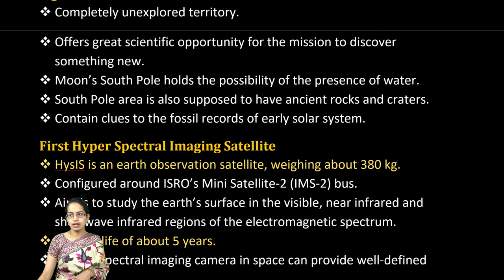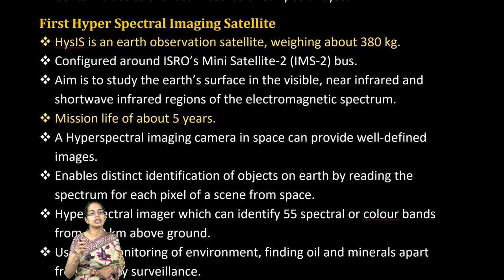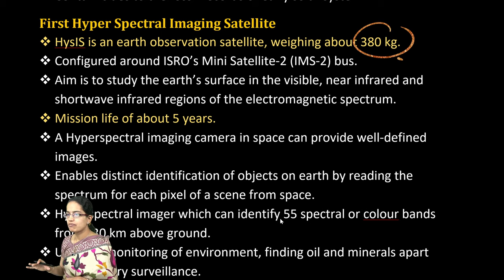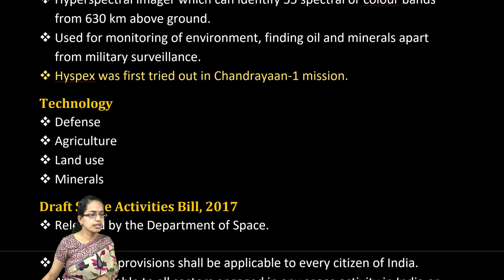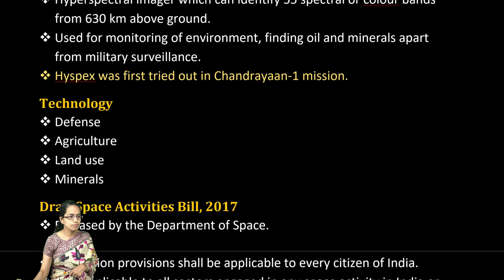Mangalyaan is a very important topic. HysIS is India's first hyperspectral imaging satellite, weighing around 380 kg with a planned lifespan of 5 years. It provides hyperspectral imaging of space from scene to scene and is used for defence, agriculture, and mineral exploration. This technology was first tried in the Chandrayaan-1 mission.